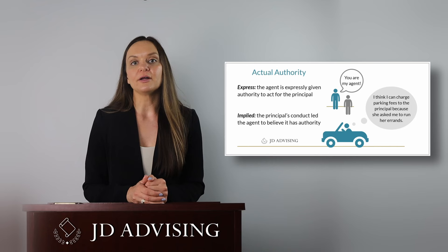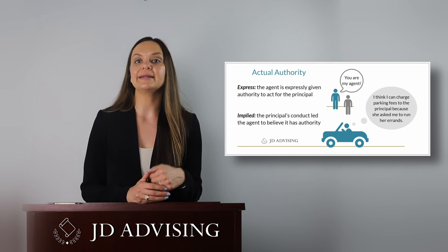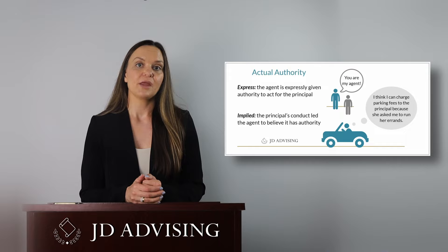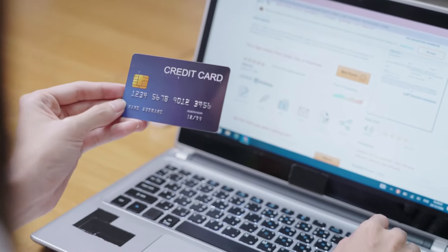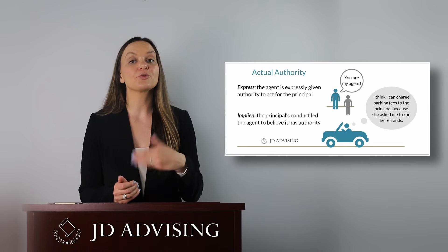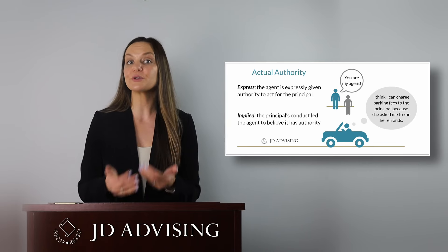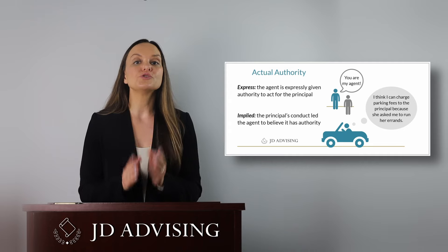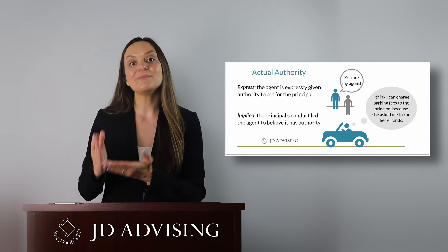For example, if your boss tells you to go visit a client located out of town to negotiate a deal, you would have the implied authority to book a business trip. Now, if you're assessing whether an agent had authority to enter into a contract for their principal and you realize that actual authority doesn't exist, don't stop there — move on to discuss apparent authority.